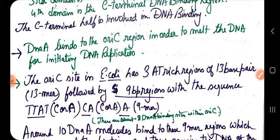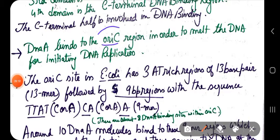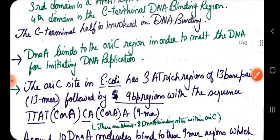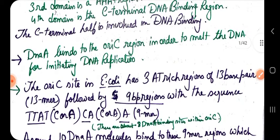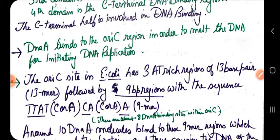In prokaryotes, oriC is the origin of replication. DnaA first initiates the replication process by binding with the oriC region in order to melt and unwind the DNA. The oriC site in E. coli has AT-rich regions of 13 base pairs each, followed by 9 base pair regions.